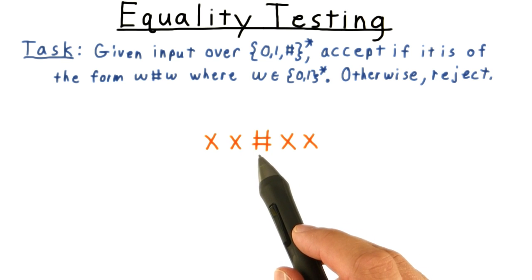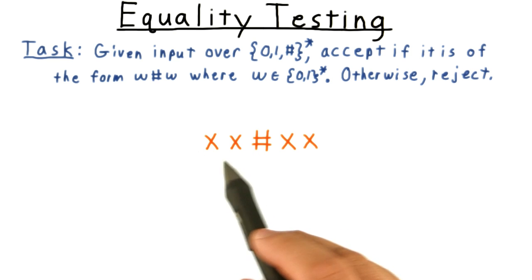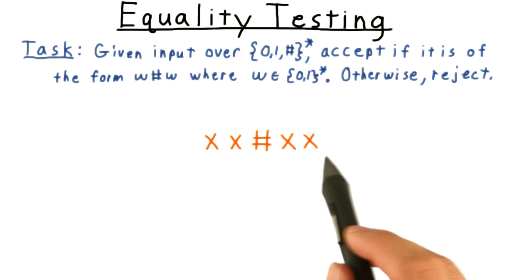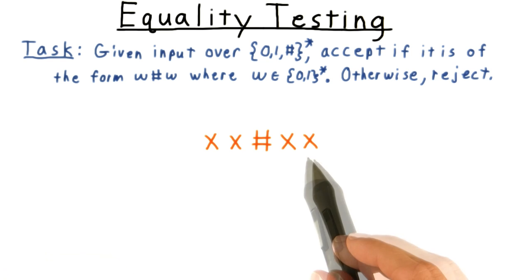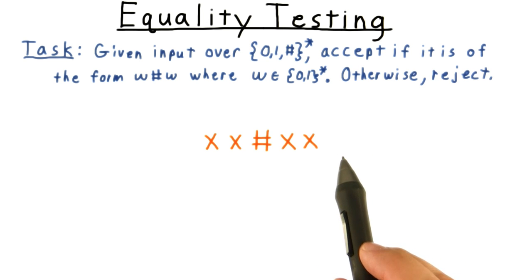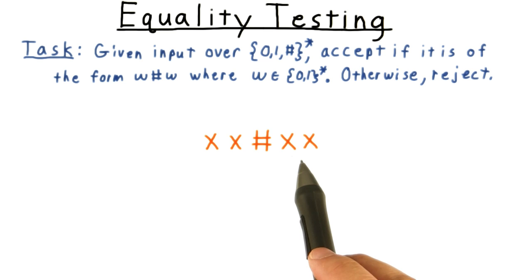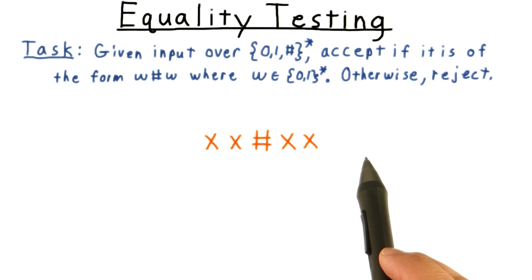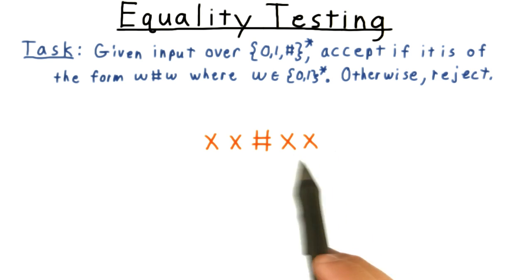At this point, the next symbol is a hash. So we know that the string to the left of the hash matches the first part of the string to the right. But there might be more to the right. So we check to make sure that we crossed off all the zeros and ones to the right of the hash. If we didn't, then we reject, because there wasn't a match. The string on the right was too long.